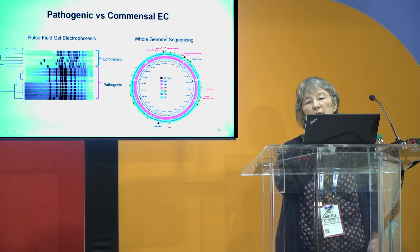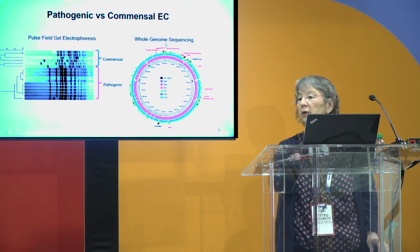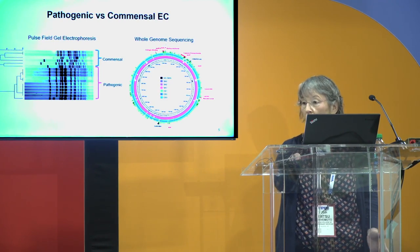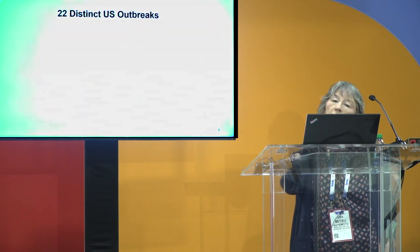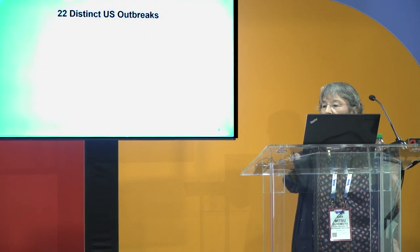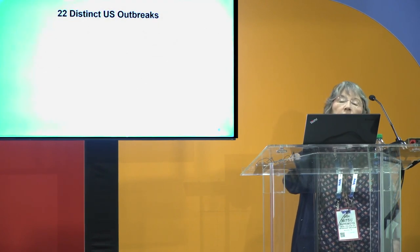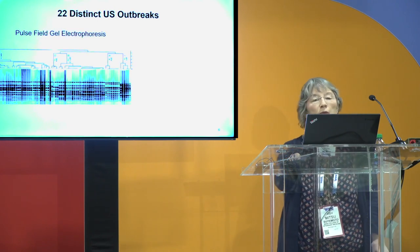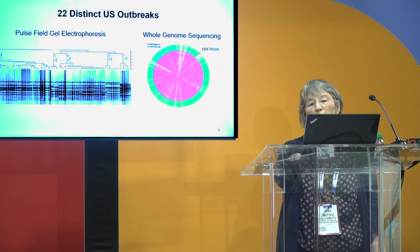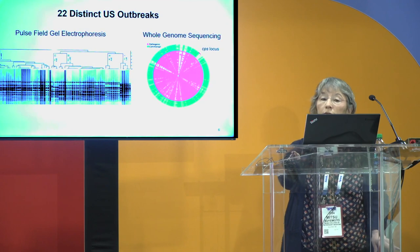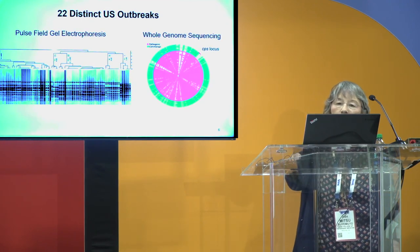We found genes conserved in the pathogenic strains and absent or very different in the commensal strains, listed here in red. Many of them are part of the Enterococcal cell wall or capsule. We also followed 22 distinct outbreaks in the U.S., mostly in the Southeast, with more pulse field gels and sequencing, and found those differences — those conserved genes — held true.